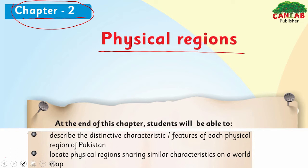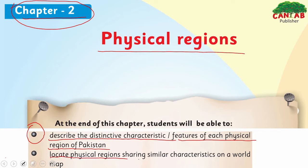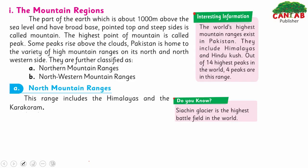Today's student learning outcomes are: number one, to describe the distinctive characteristic features of each physical region of Pakistan. In the previous lecture we covered physical regions; today we will identify their different distinctive features. Number two, to locate physical regions sharing the same characteristics on the world map — we will show you those features on the world map.